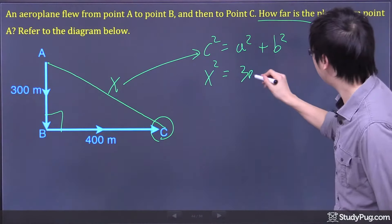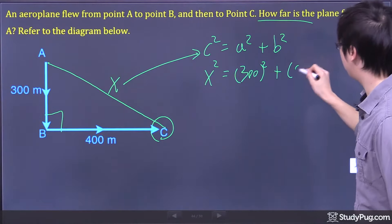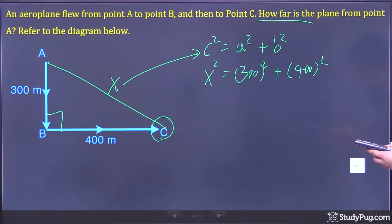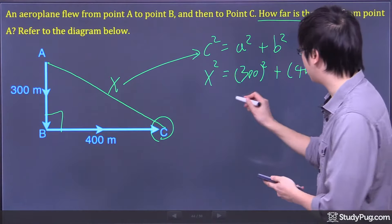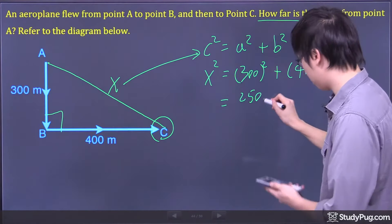So let's just plug it in. 300 squared plus 400 squared. Now I'm just going to find out the answer on the right-hand side, squaring both sides and adding them together. We get ourselves 250,000.